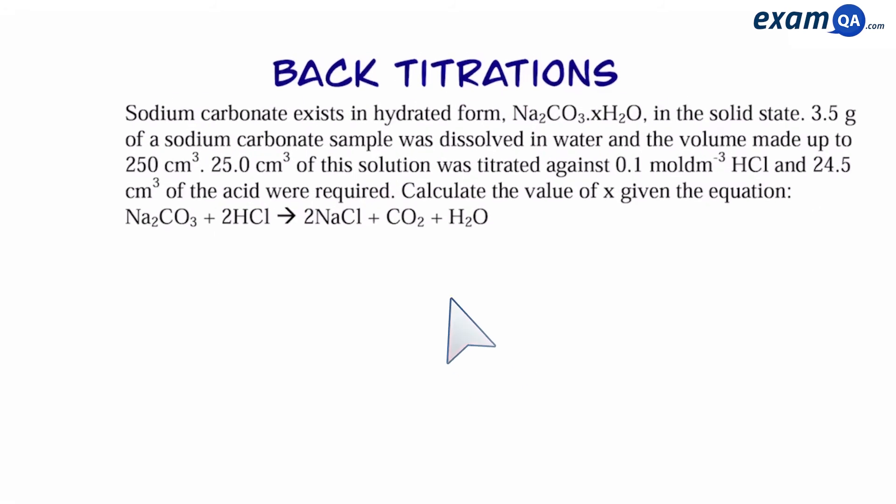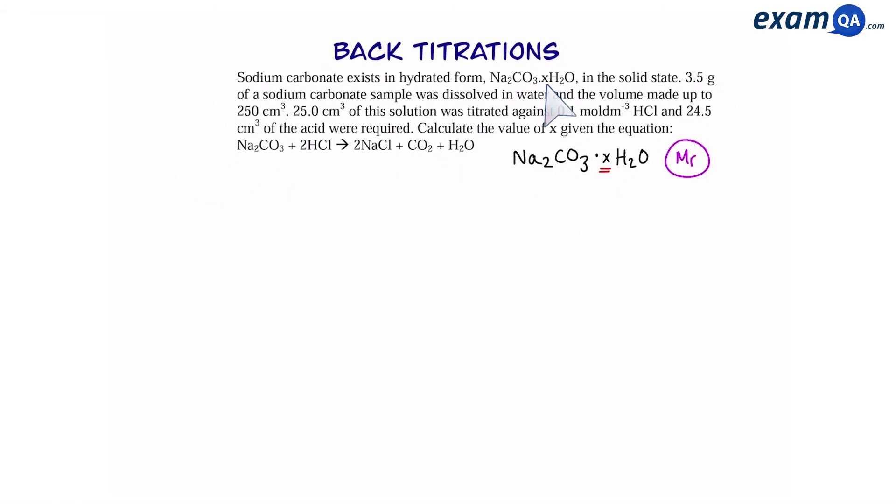Okay, here's a question on back titrations. We want to work out the value of x in this hydrated sodium carbonate. To do that, we need to work out the MR. Let's say the MR was 178 for example. Then we could work out the value of sodium carbonate using the periodic table. That's 106. Subtract 106 from both sides, leaving you with x times water equals 72. Then, work out the value of water, which is 18, and then divide both sides by 18, leaving you with x equals 4.